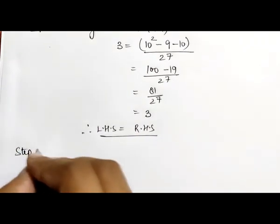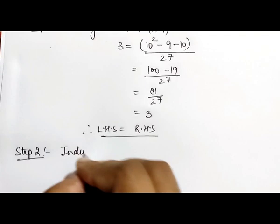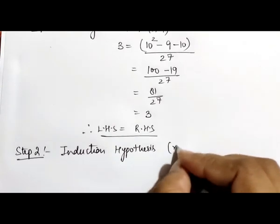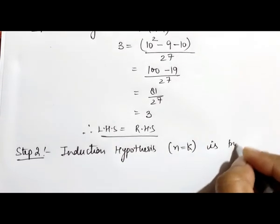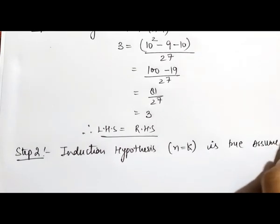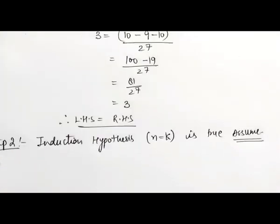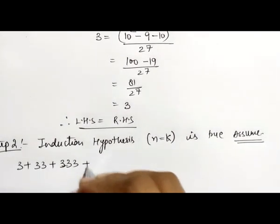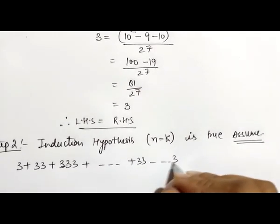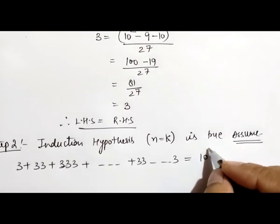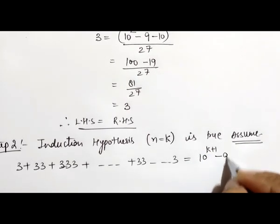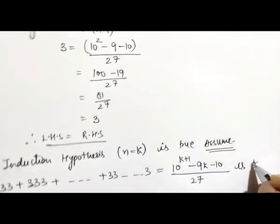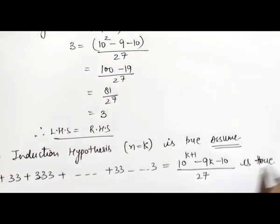Step 2 is the induction hypothesis. In this step, we assume that when n = k the statement is true. We assume it as: 3 + 33 + 333 + ... + 33...3 = (10^(k+1) - 9k - 10) / 27 is true.